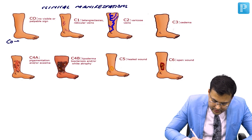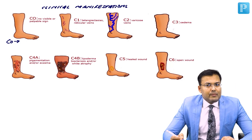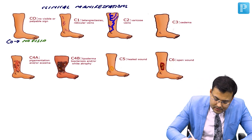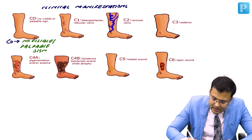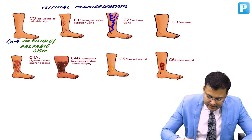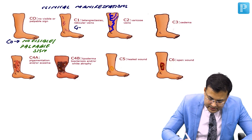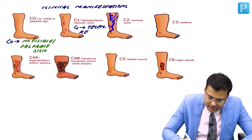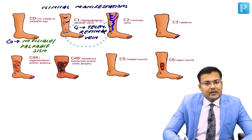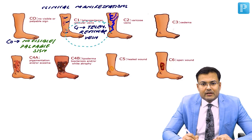C0 means there are no visible or palpable signs. C1 is when the patient has telangiectasia or reticular veins — you can see telangiectasia or reticular veins. This was asked in NEET-PG: what is included in C1?